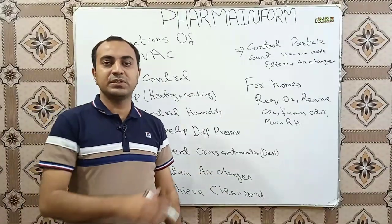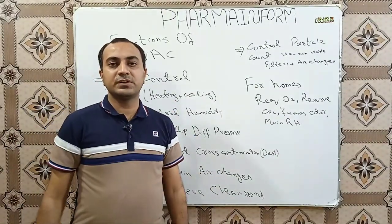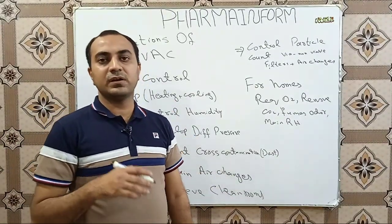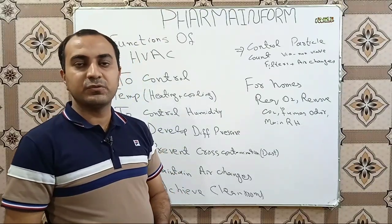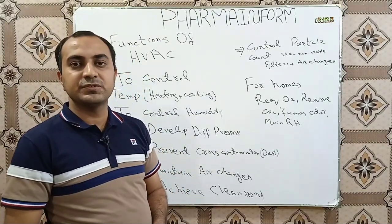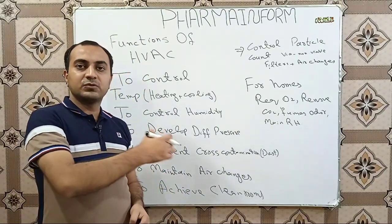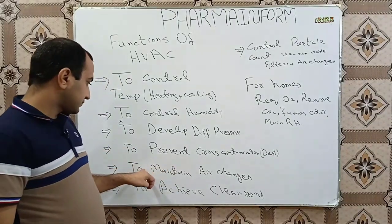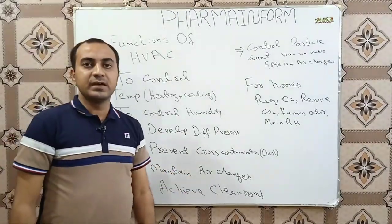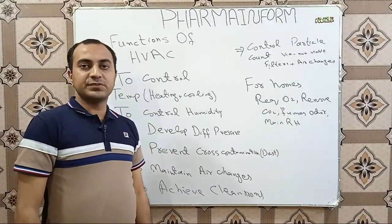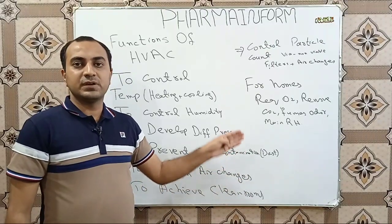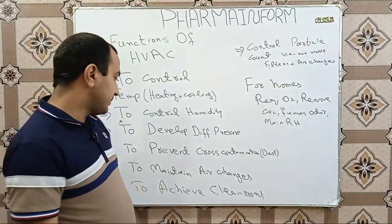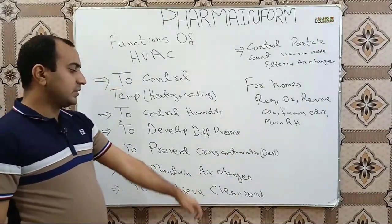The HVAC system is also used to maintain air changes. In a pharmaceutical industry, a specific and certain number of air changes are required in each area, and those air changes are supplied by the HVAC system. We will discuss how to calculate air changes in a separate video.